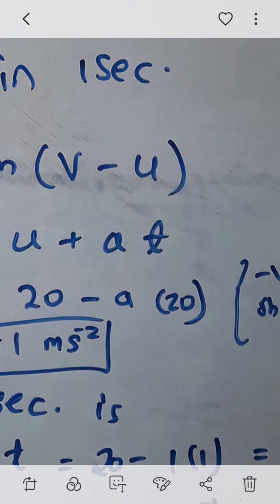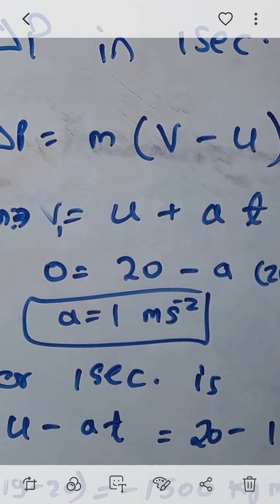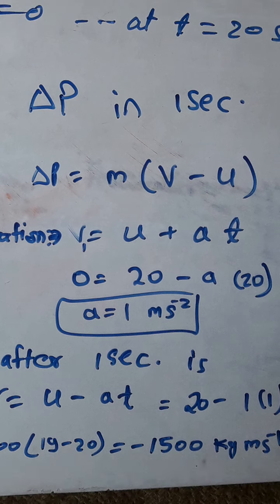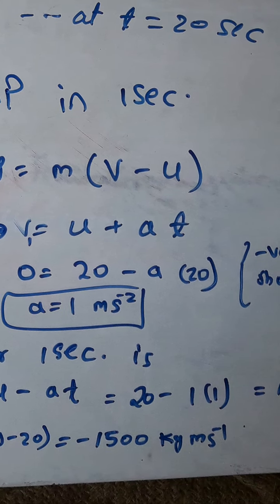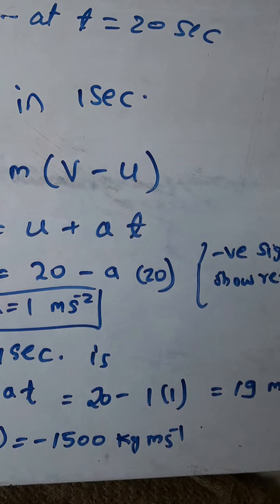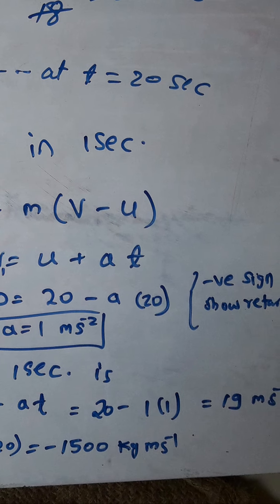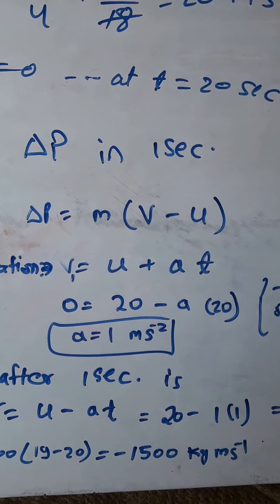Using this case to find the acceleration, I get 1 meter per second squared. The negative sign shows that it is retardation, not acceleration.